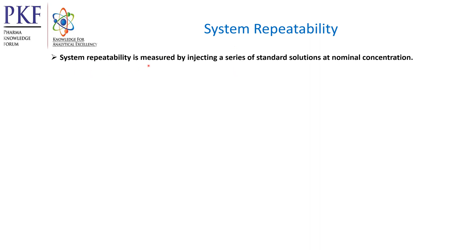System repeatability is measured by injecting a series of standard solutions at nominal concentration, and it depends upon the method. For a purity test by area normalization method, the standard will be injected at nominal concentration. For repeatability test of impurity profile, the corresponding impurity at a specification level will be injected. For system repeatability of assay test, the standard will be injected at nominal concentration.